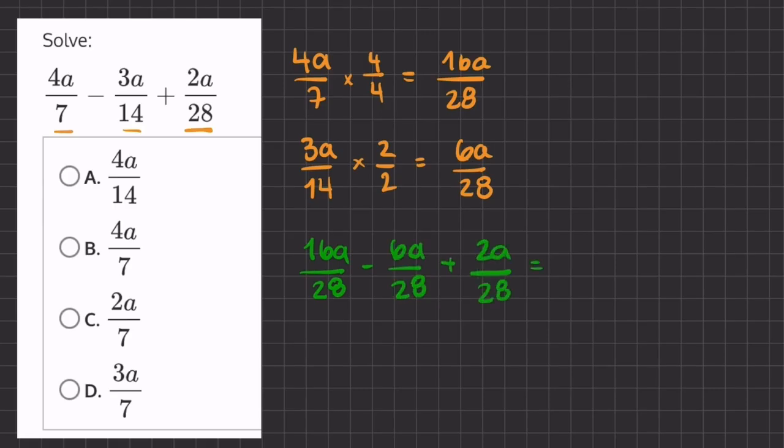Because all of our denominators are the same, we can just subtract and add the numerators. So 16 minus 6 is 10a, and if we add another 2a to it, we get 12a over 28.